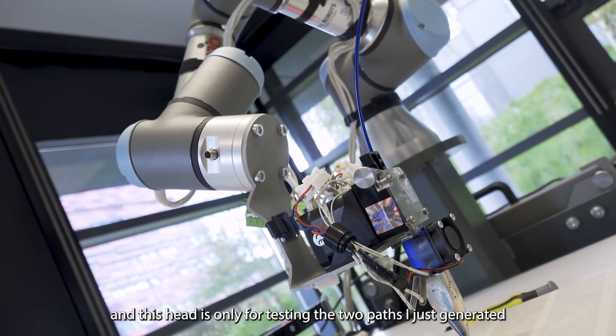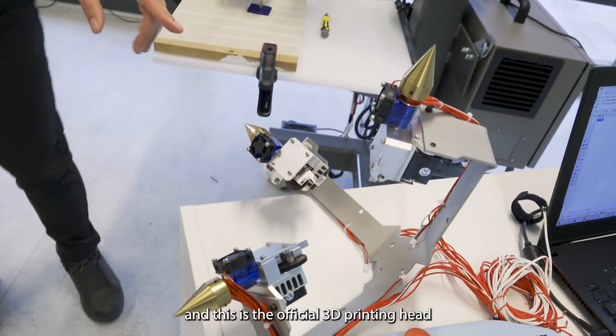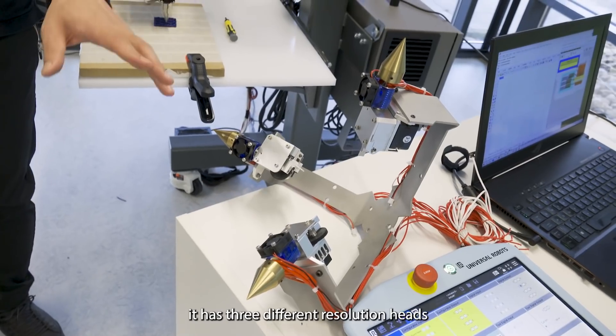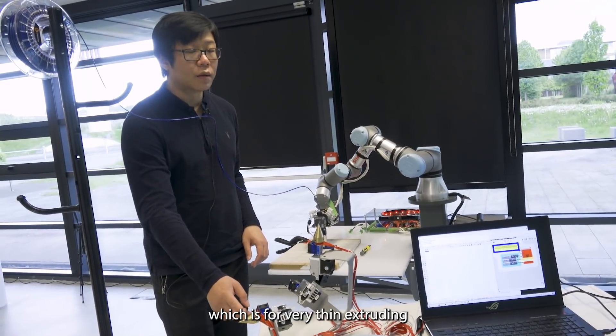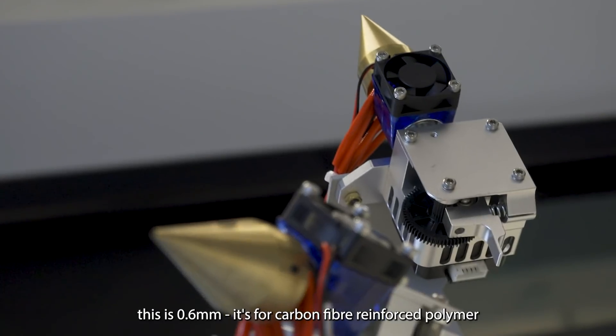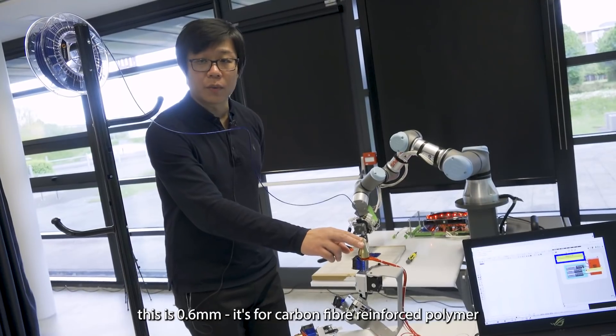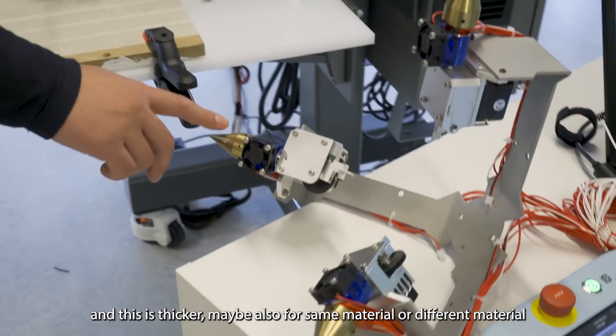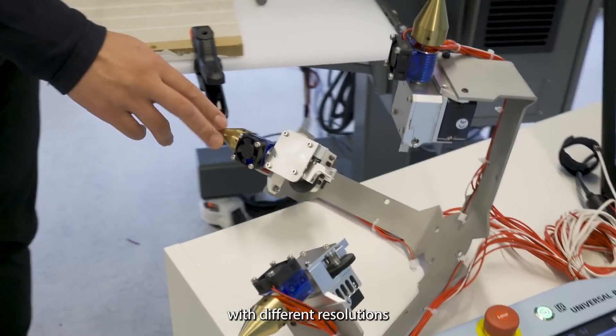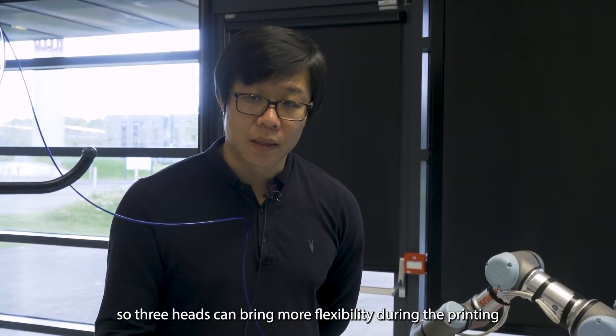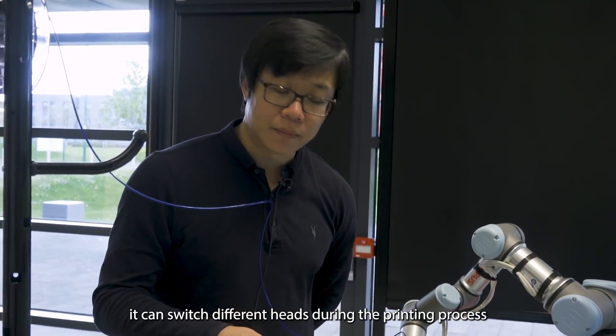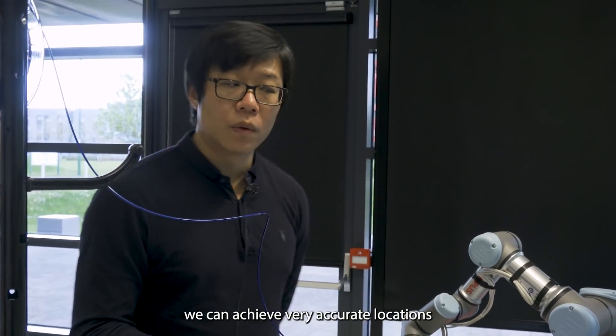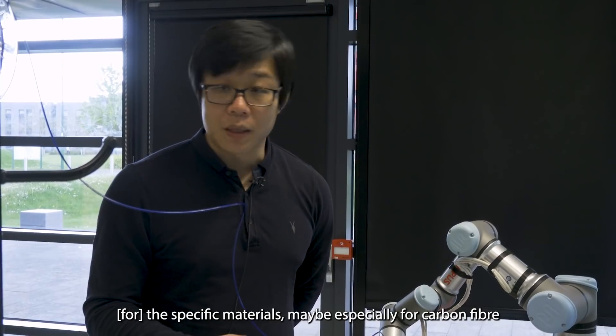This head is only for testing the two parts I just generated. And this is the official 3D printing head. It has three different resolution heads. The resolution for this one is only 0.4 mm, which is for very thin extruding. This is 0.6, which is for carbon fiber reinforced polymer. And this is thicker, maybe also for the same material or different material with different resolutions. So three heads can bring more flexibility during the printing. It can switch different heads during the printing process. We can achieve more accurate location for specific materials, maybe especially for carbon fibers.